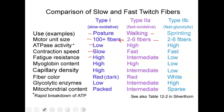Type 2B, the fast glycolytic fibers, are used for activities like sprinting. Motor units attach to two to five muscle fibers. ATPase activity is high. Contraction speed is fast. Fatigue resistance, however, is low — you tire out faster. Myoglobin content is low. Capillary density is also low. Fiber color appears white. Glycolytic enzymes are high, and mitochondrial content is sparse.